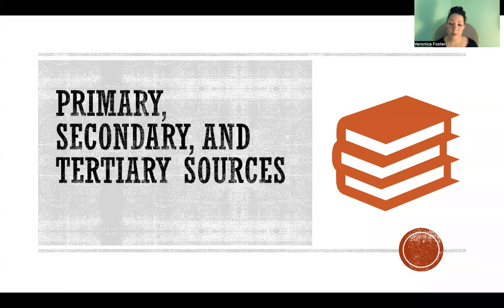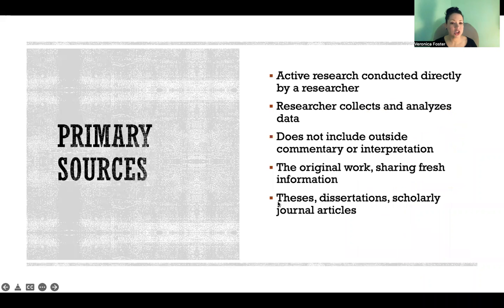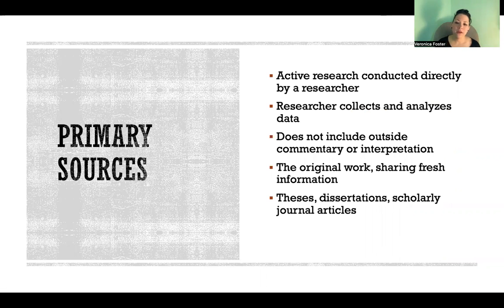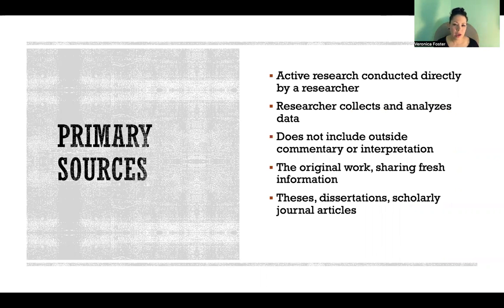Hello. In this video I'm going to talk about primary, secondary, and tertiary sources of information. Primary sources of information, also referred to as primary research, is when there's active research conducted directly by a researcher. A primary source of information means that it's the unique, individually formed source of information that is created right at the moment of the event, or whatever it is that that source of information is about.